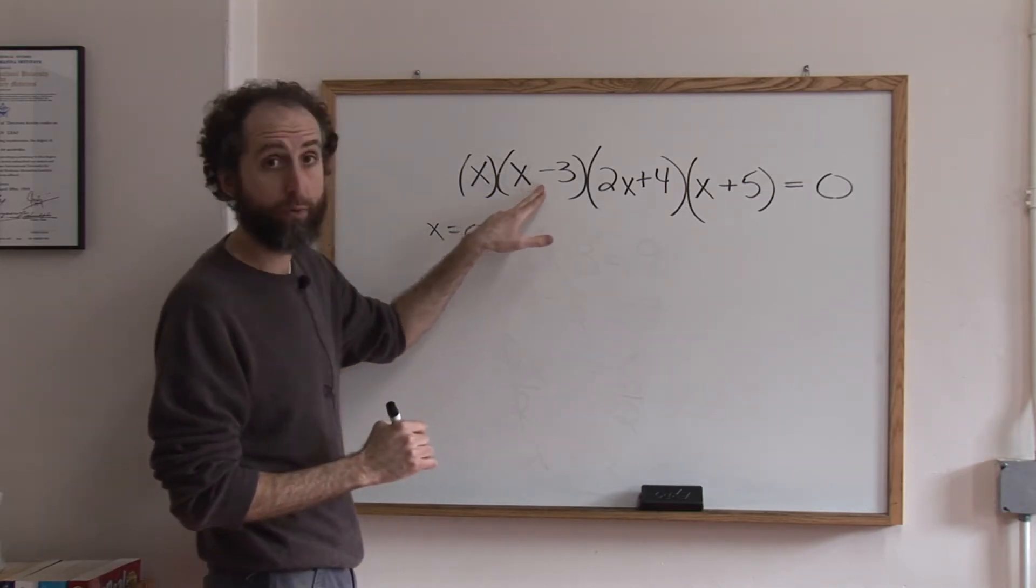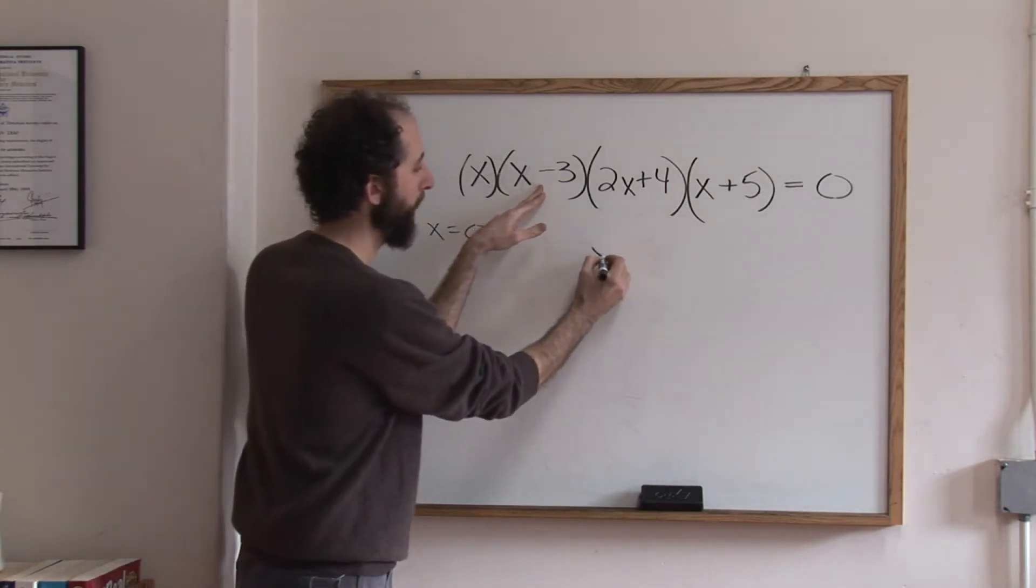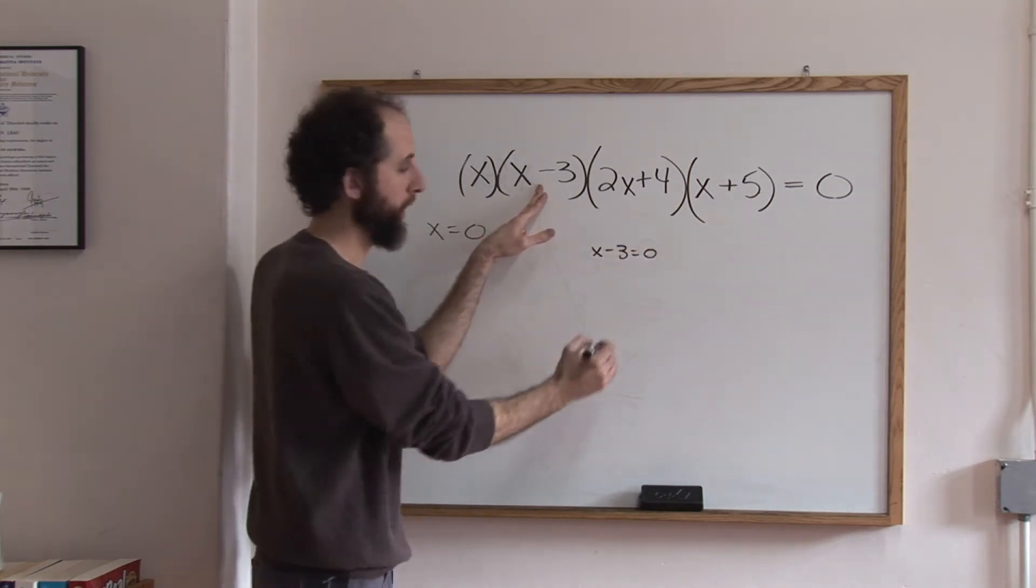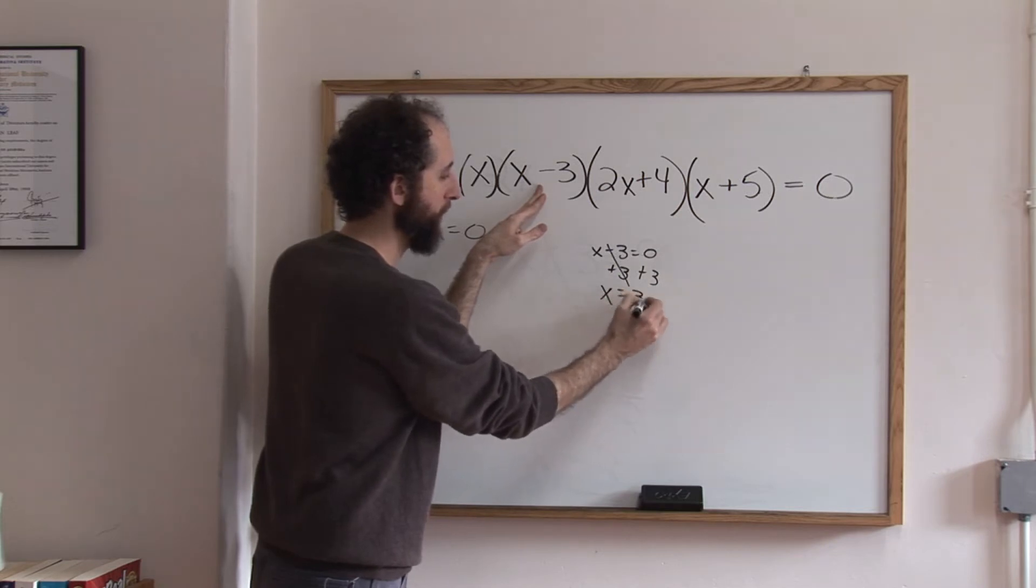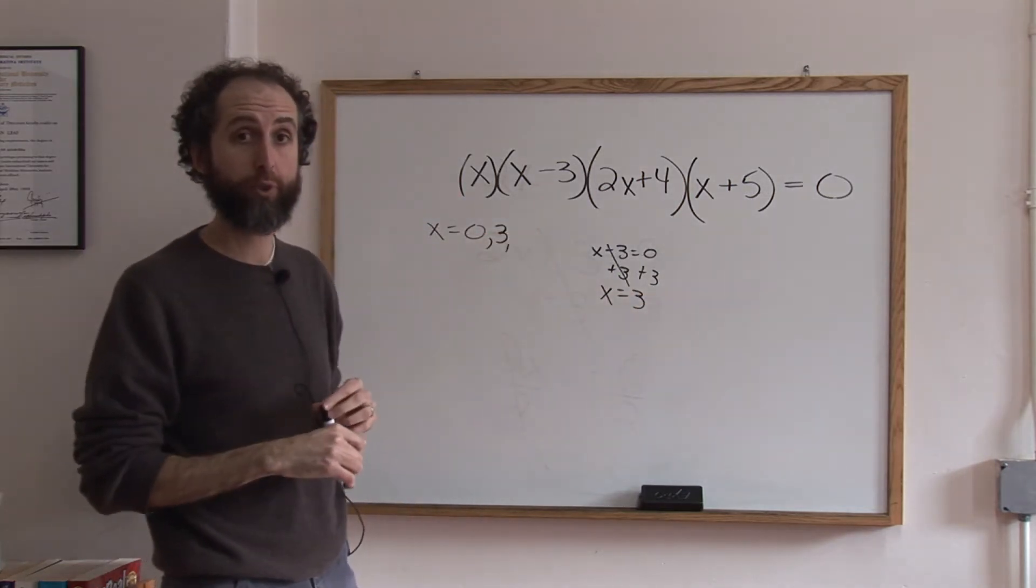Now we say what would make this equal zero? So you're just going to rewrite it equal to zero. Solve. Add three to both sides. x equals three. So there's another root, or solution, or zero.